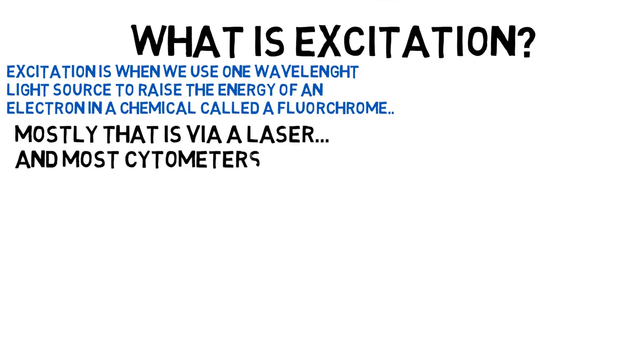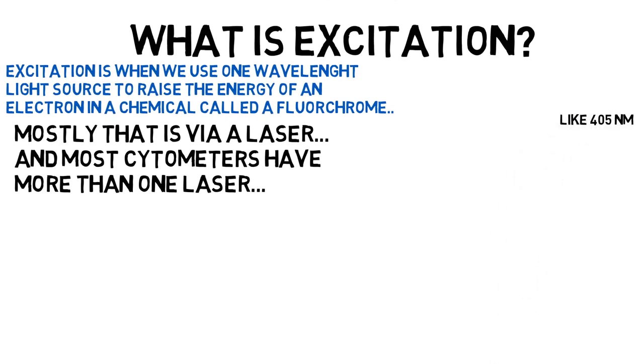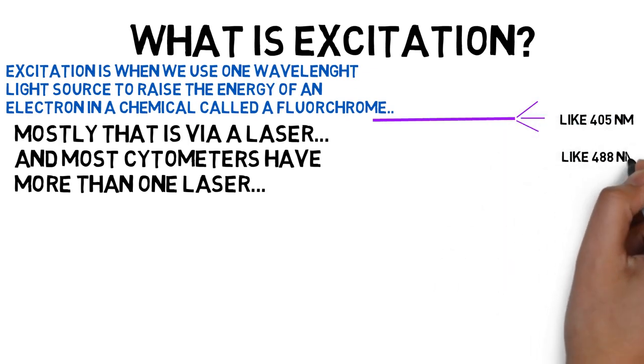We mostly use lasers in flow cytometry, so let's concentrate on lasers in this tutorial. Some flow cytometers have only one light source, but most have several. Here are the common lasers, first the 405 nanometer violet line, it's not quite UV, but many people call it UV regardless.